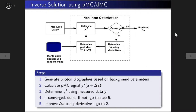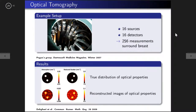The DMC workflow: take background optical properties, run random walks and simulations, store them in a database. In the first iterate, delta A is zero. Determine the model prediction, compare with measured data, compute chi-squared. If not converged, use the derivatives to determine delta A, update, and cycle until two successive iterates differ by less than epsilon.